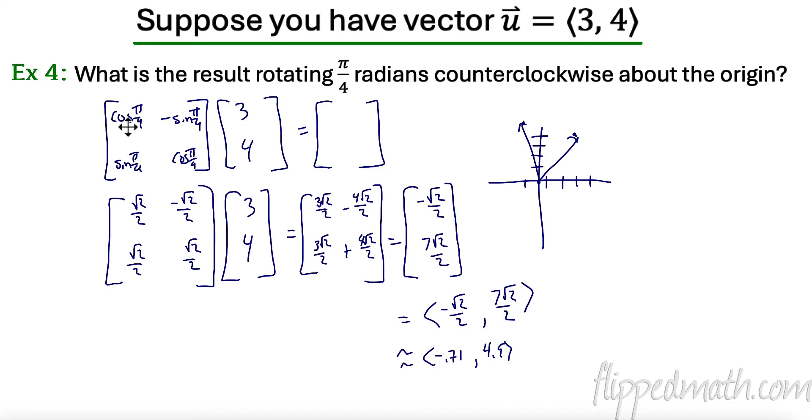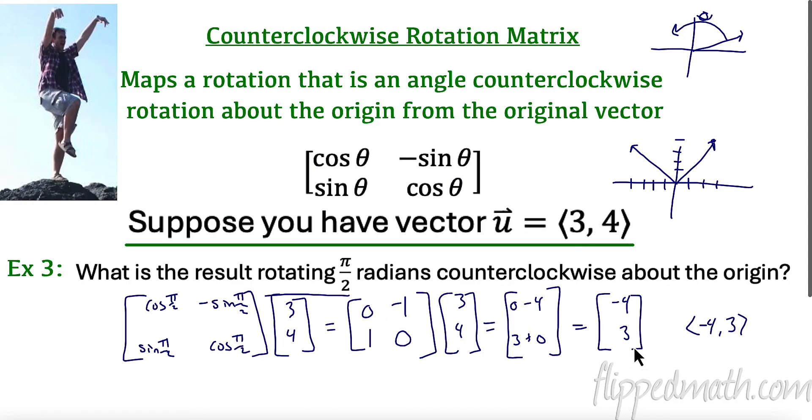So I'm doing cosine of pi over four is radical two over two. Negative sine of pi over four is negative radical two over two, and then radical two over two and radical two over two. When I multiplied it, combined it, I got negative radical two over two and seven radical two over two. Now, it's really important to understand that this is a matrix that represents this vector. Much like I didn't write this over here, but this matrix represents this vector.